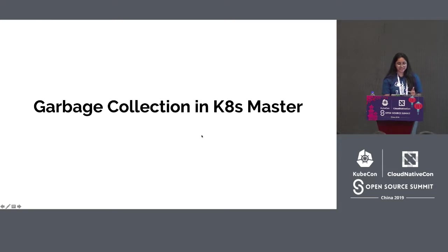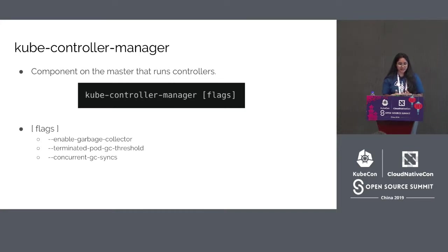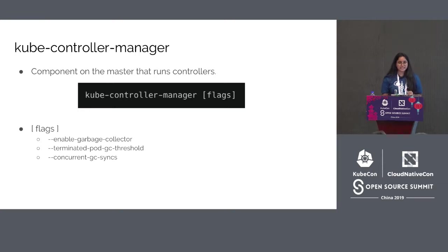Garbage collection at master level is managed by kube-controller-manager. The kube-controller-manager is a component on the master that runs and manages controllers. Examples of controllers that ship with Kubernetes today are replication controller, namespace controller, endpoint controller, and so on. Garbage collector controller is one such controller managed by kube-controller-manager, and the controllers can be configured by flags passed to it.